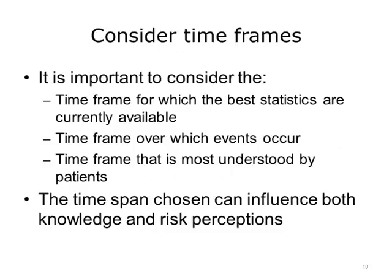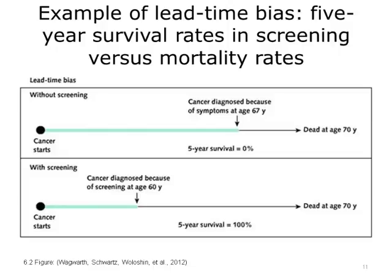A fourth best practice is to consider time frames. When presenting risk or benefit information, it is important to consider the time frame for which the best statistics are currently available, the time frame over which events occur, and the time frame that is most understood by patients. The time span chosen can influence both knowledge and risk perceptions. People often fail to adjust their risk perceptions to account for longer time spans. For example, people are more likely to increase their use of seatbelts if told they have a 33% lifetime risk of serious injury without seatbelts, compared with being told the much smaller risk of injury in a single trip. An example from screening illustrates potential biases that may result when presenting statistics over time, and why selecting and communicating a meaningful outcome is critically important.